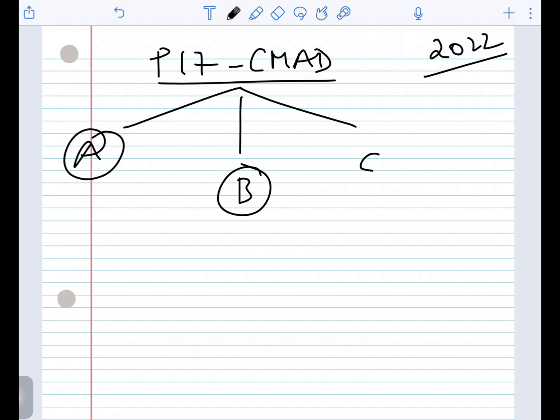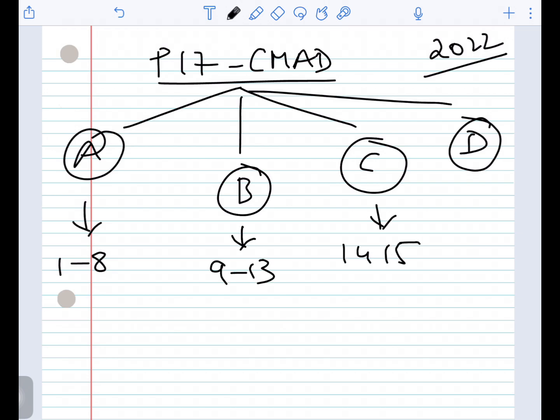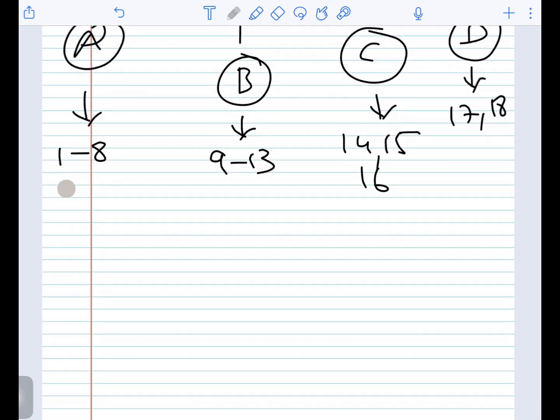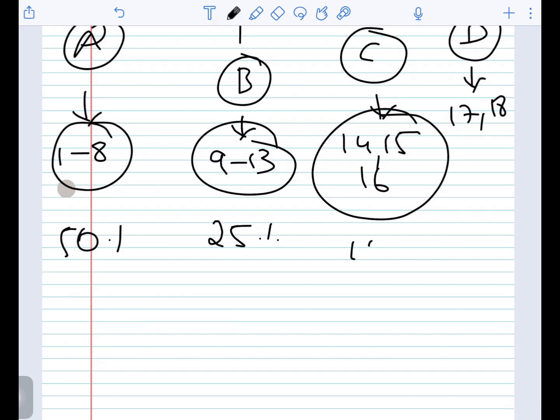The institute material for CMAID is divided into four sections: Section A, Section B, Section C, and Section D. Section A contains study notes 1 to 8. Section B has study notes 9 to 13. Section C has study notes 14, 15, and 16. Section D has study notes 17 and 18. The weightage is: Section A contains 50%, Section B weighs 25%, Section C weighs 15%, and Section D weighs 10%, for a total of 100%.